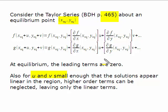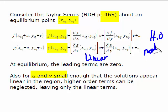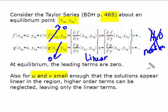This is the Taylor series — you can see it in the textbook on page 465. The first terms are the constant terms, then we have the linear terms, and over here, not written, are the higher-order nonlinear terms — nonlinear in u and v. Since this is equilibrium, the constant terms are zero by definition of equilibrium. And if u and v are very small, then squaring and cubing them makes them much, much smaller, so we neglect those terms. Now we have the linearized system — an expression for the linearized system about an equilibrium point.